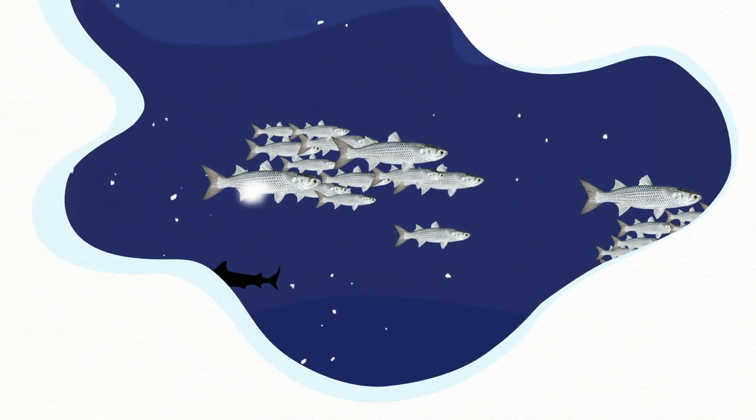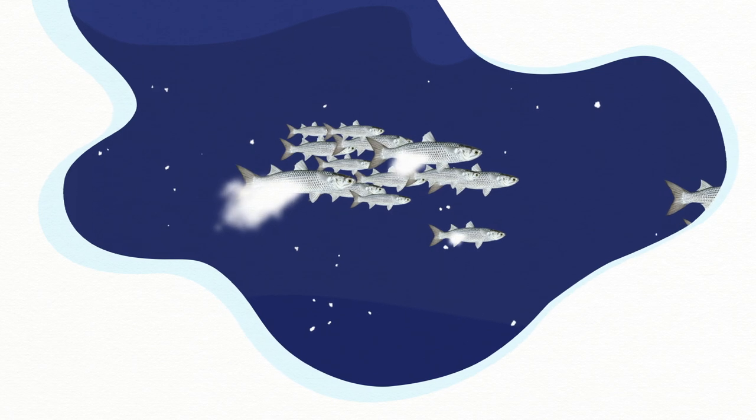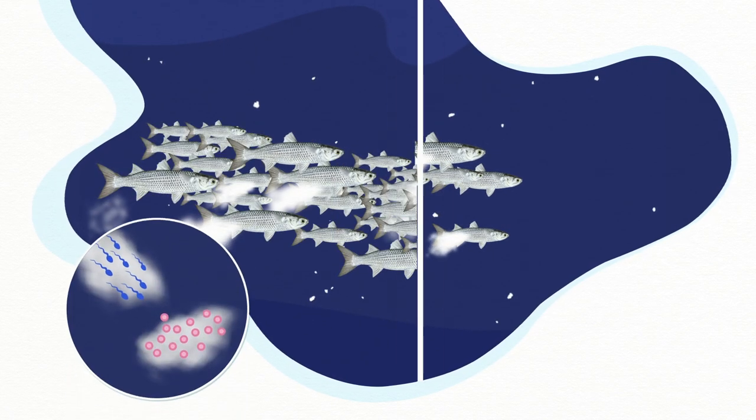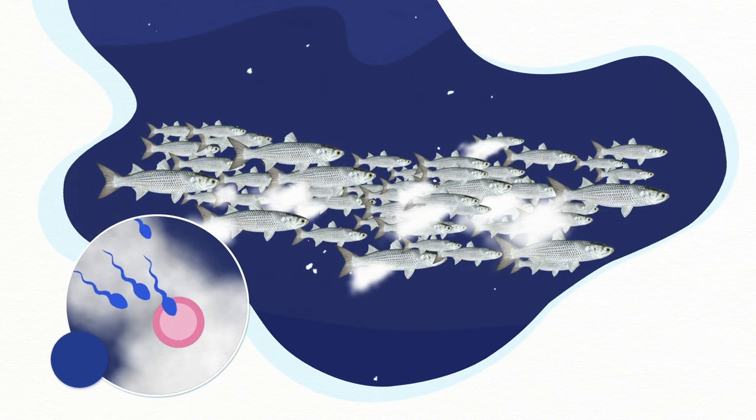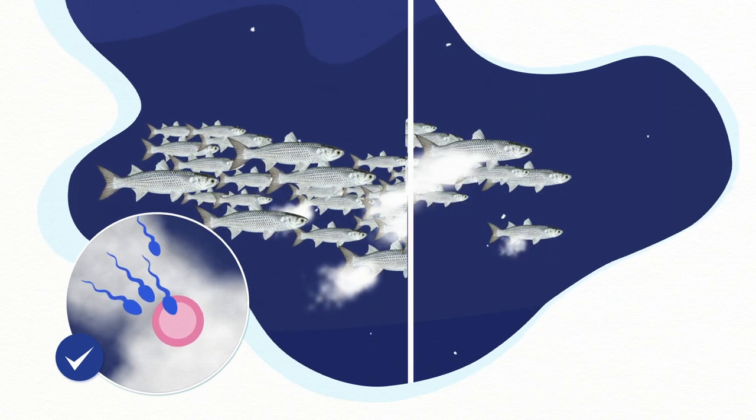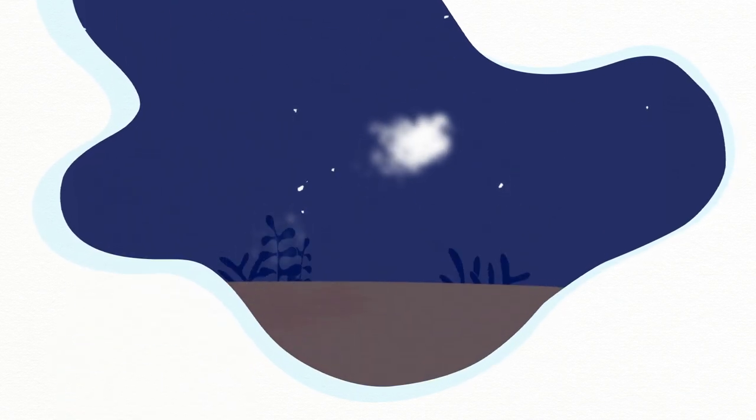And here is the problem. As spawning occurs in open water, there must be very dense schools for eggs and sperm to have a chance to meet. If not, they will get lost in the sea.